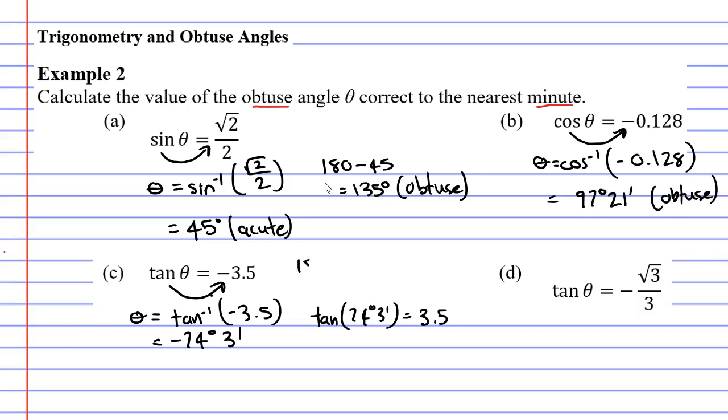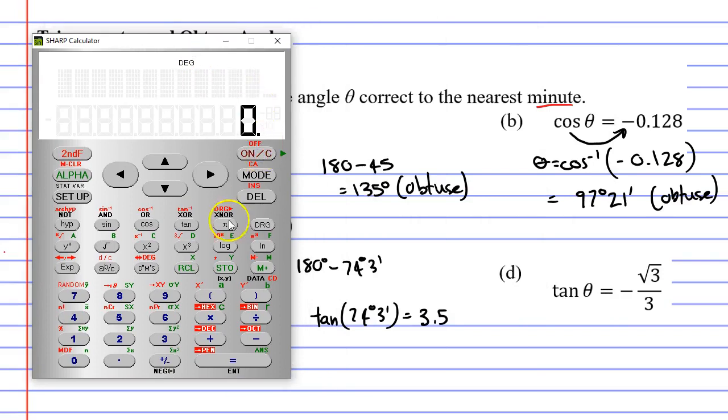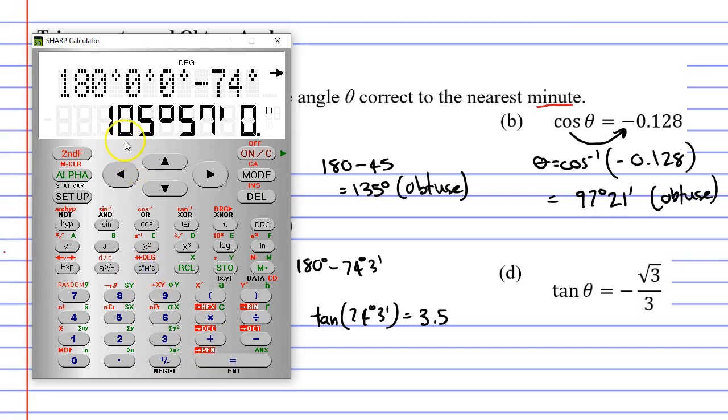Well, if I go 180 degrees and subtract 74 degrees, 3 minutes, let's do that on the calculator. 180 degrees minus 74 degrees, 3 minutes equals, and we get 105 degrees, 57.